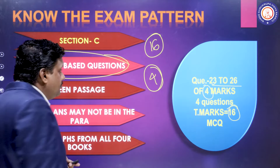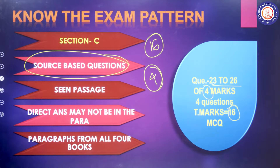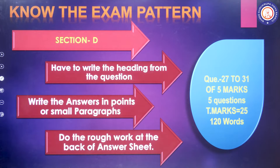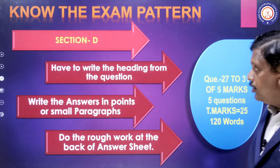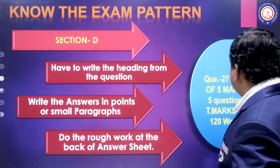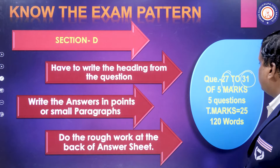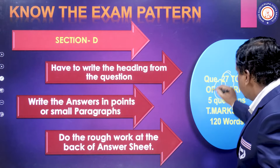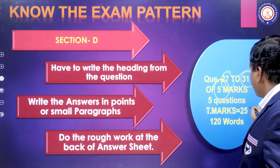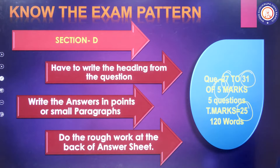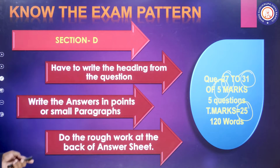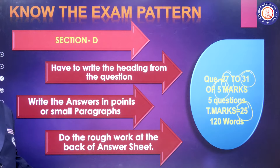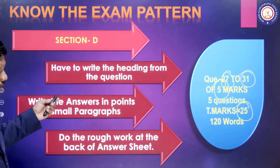Section D is long answer type questions — question numbers 27 to 31, five marks each, totaling 25 marks. You have to write answers in not more than 120 words. Write in points; if points are not available, you can write in small paragraphs.